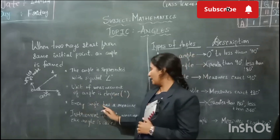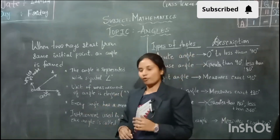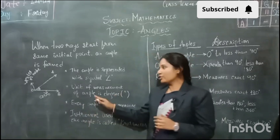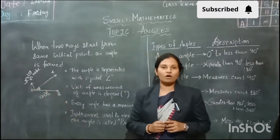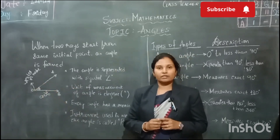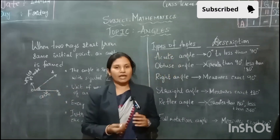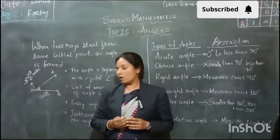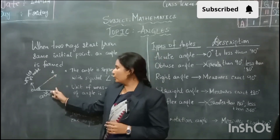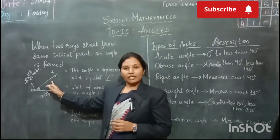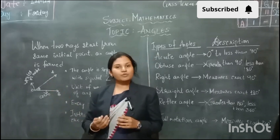Every angle has a measure, which means we can measure each and every angle formed. To measure the angle between two arms, we use the instrument called a protractor. We will discuss how to measure the angle later. Based on the opening of these two rays, there is a classification made on types of angles.